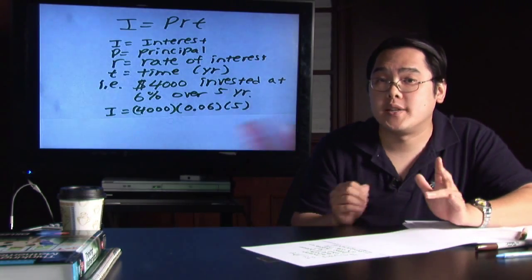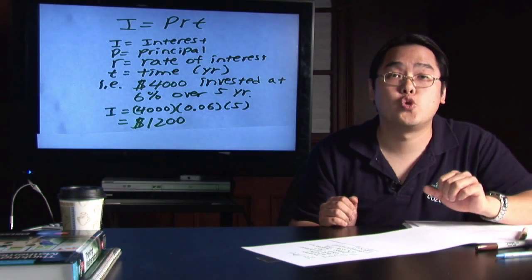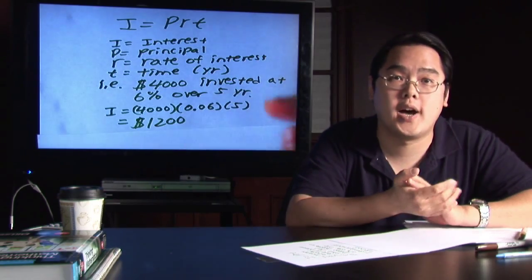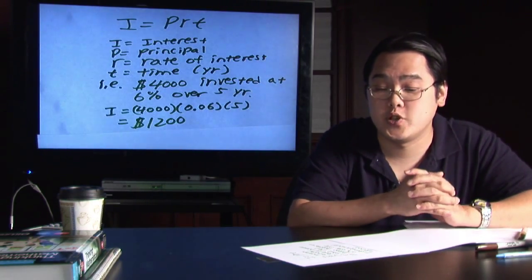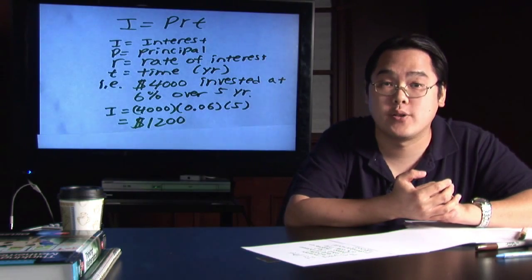And then, at the very end, you should have the grand finale of $1,200. That is how much interest is being added to your account over the five year span at 6%, which is pretty darn good because you're going to take that number and add it to $4,000.